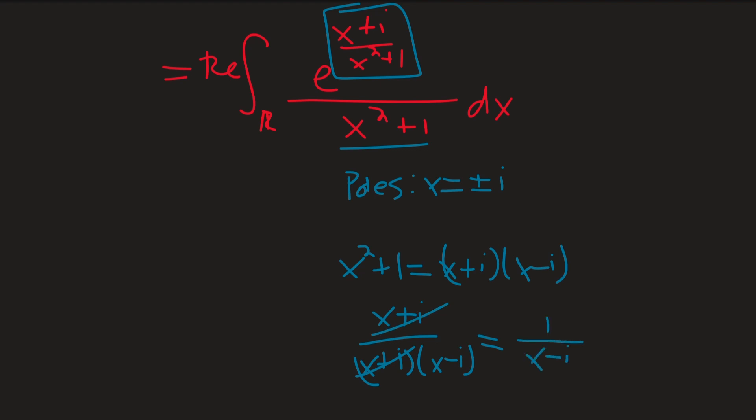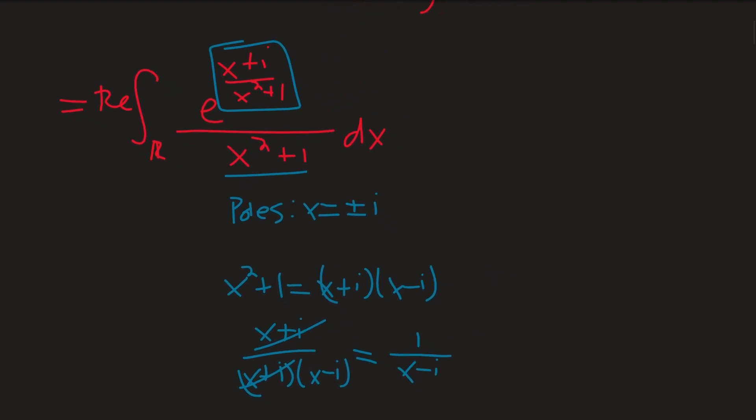So let me just rewrite our integral as that real quick. Still the real part, of course. And we're going to do it for all real numbers, we haven't done a u sub or anything. 1 over (x-i) over x² + 1.